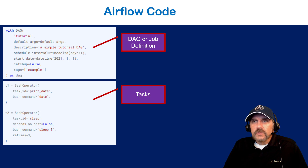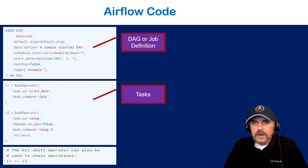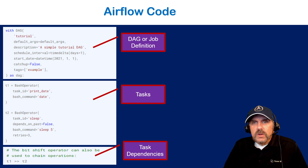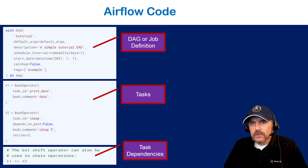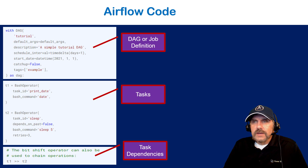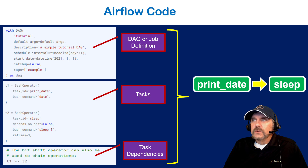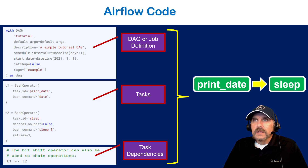The final step is defining the dependencies. Using the shift operator, we say task one, then greater-than greater-than, then the next task. This creates our task dependencies. When done, we have our DAG: 'print_date' related to 'sleep' — print_date comes first, followed by sleep. We can see this in the UI that Airflow provides.